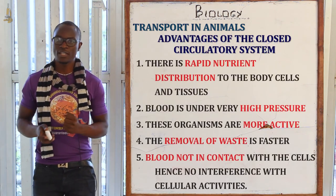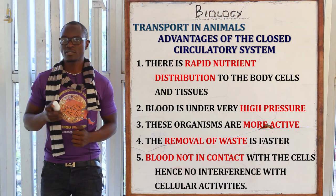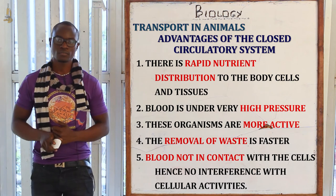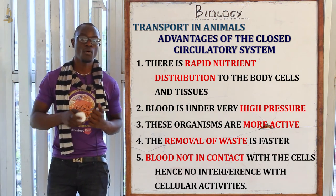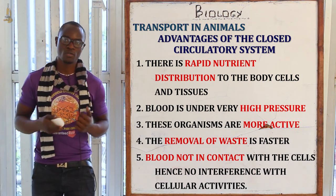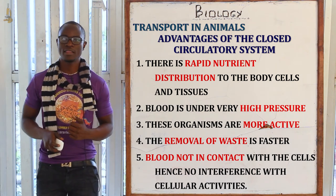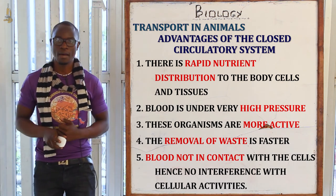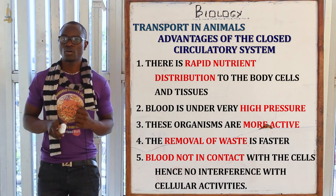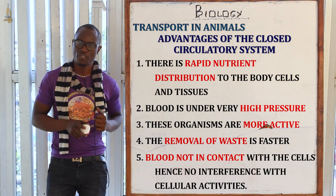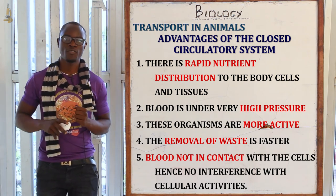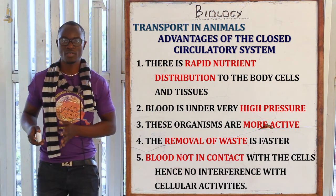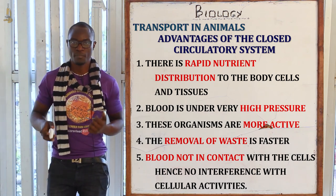The advantages of the closed circulatory system include: rapid nutrient distribution within the organism; high pressure in blood flow; organisms are more active compared to those with an open circulatory system; waste removal is very rapid; and because blood is not in direct contact with the cells, there is no interference with cellular activities. The cells in the tissues are free to carry out their processes undisturbed.